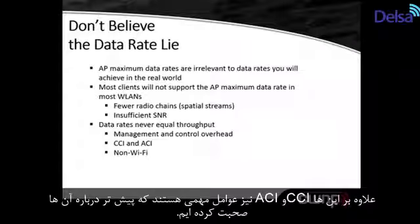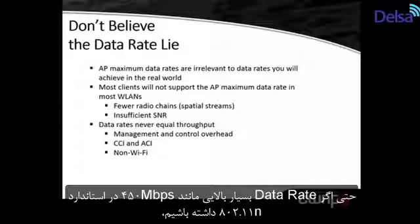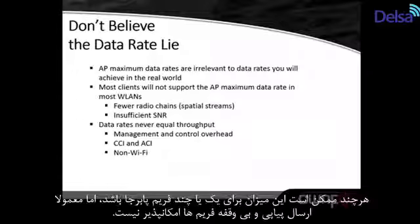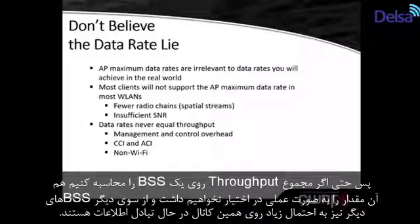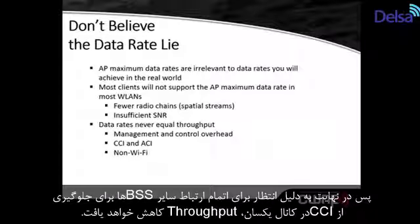In addition, you have CCI and ACI. Even though I might send a frame at a very high 802.11n data rate like 450 megabits per second, I can't send frames at that rate continuously back to back. Even accounting for management and control overhead, I also have to wait before sending the next frame. So I won't achieve that throughput even calculating aggregate throughput in the BSS. Other BSSs communicating on the same channel cause co-channel interference, meaning the aggregate throughput in my BSS is lower because stations must be quiet when they detect frames from a different BSS.